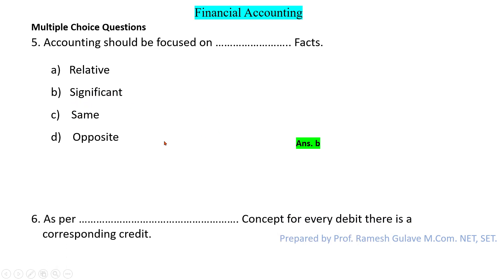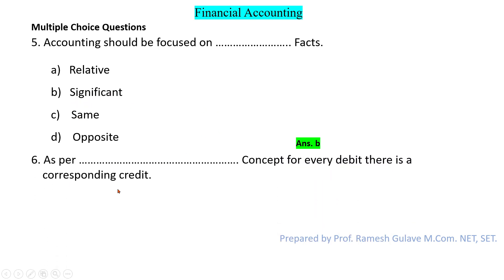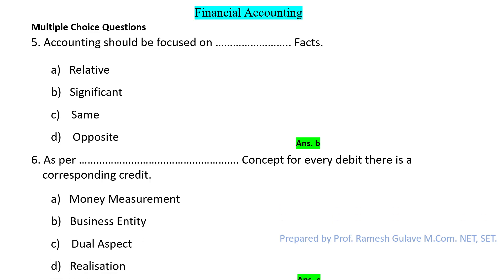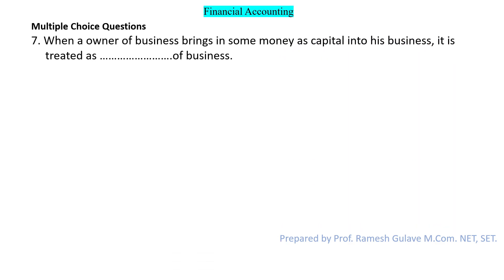The next question says: as per dash concept, for every debit there is a corresponding credit, and vice versa. As per the dual aspect concept, for every debit there is a corresponding credit and for every credit there is a corresponding debit. So here option C is the right answer.